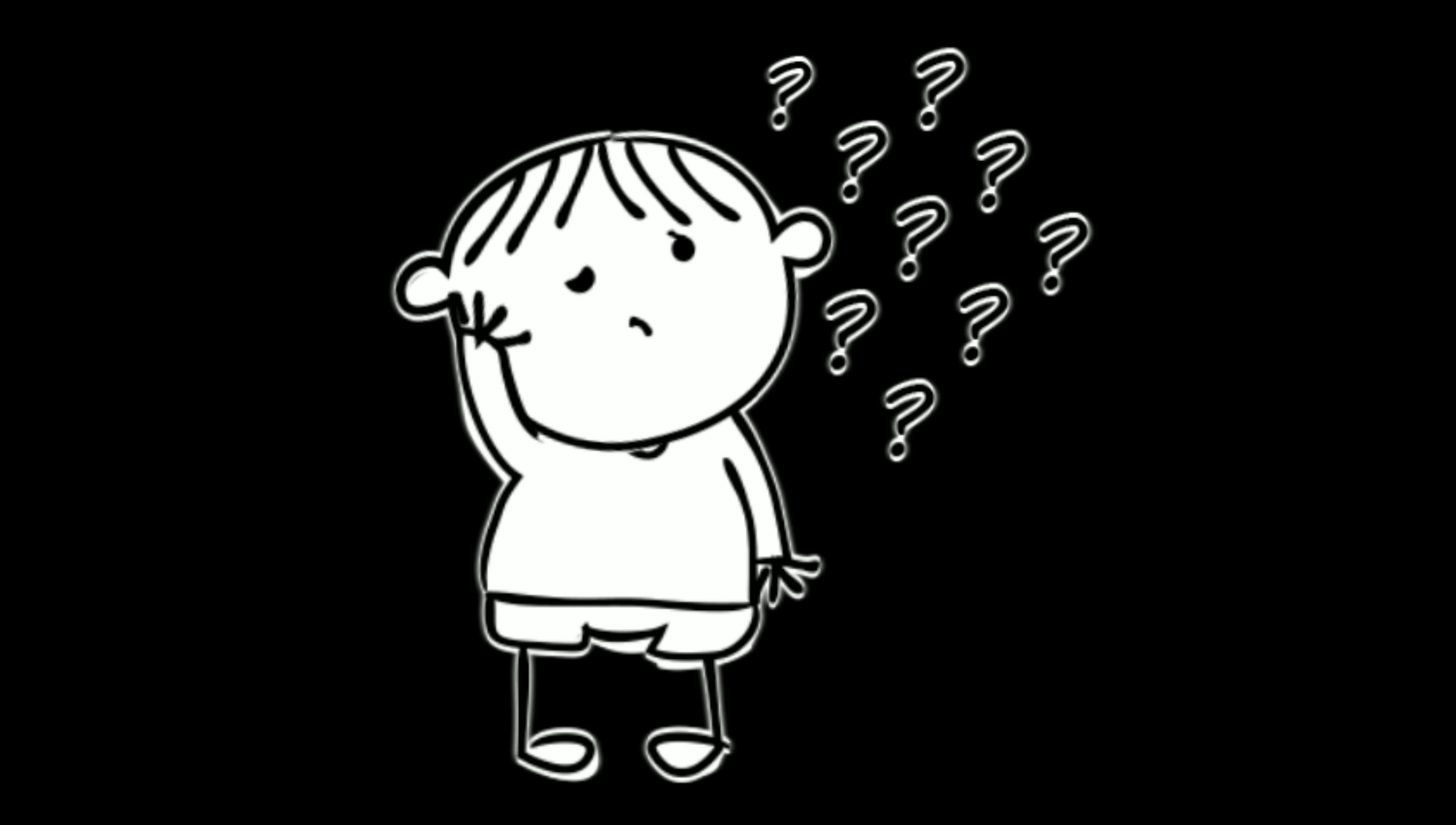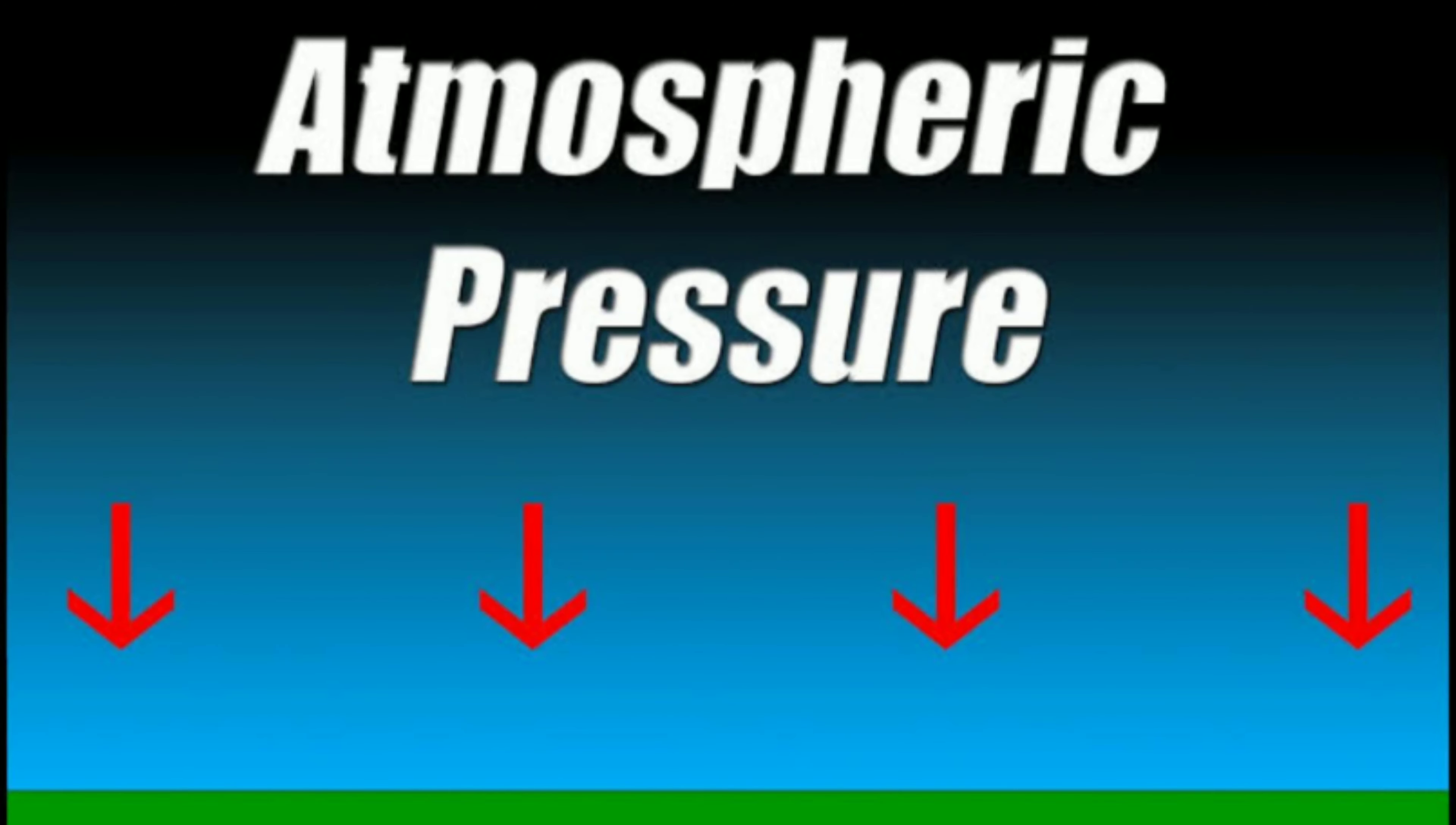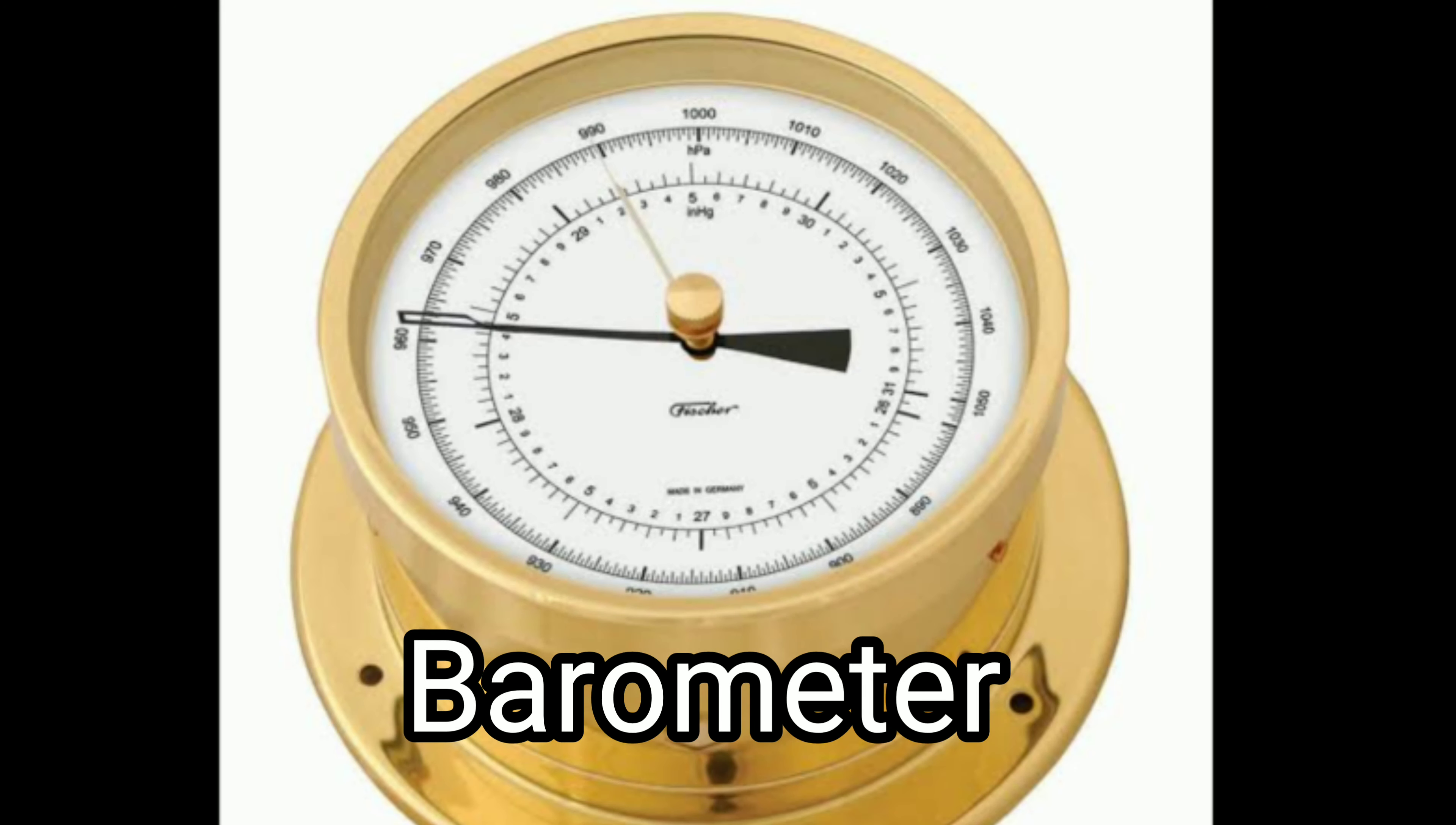Under ordinary conditions, atmospheric pressure at sea level is about 1,400 Newtons per square meter. It can be measured with the help of a barometer.